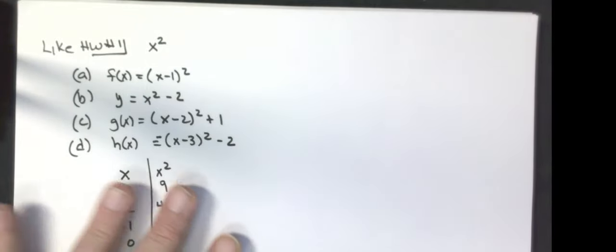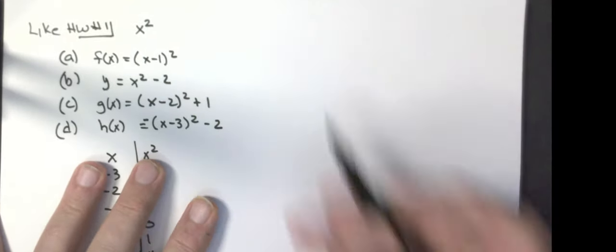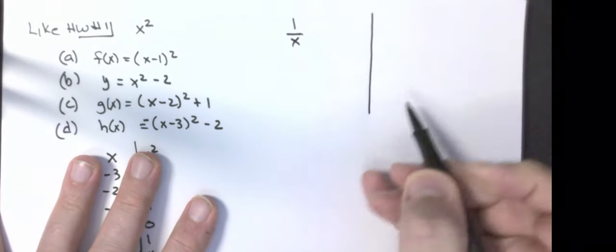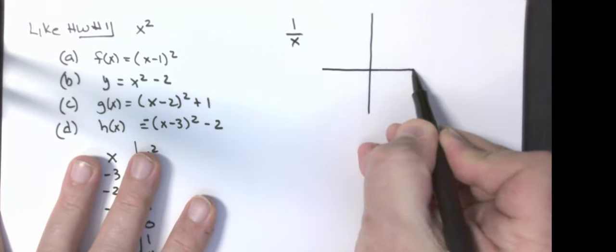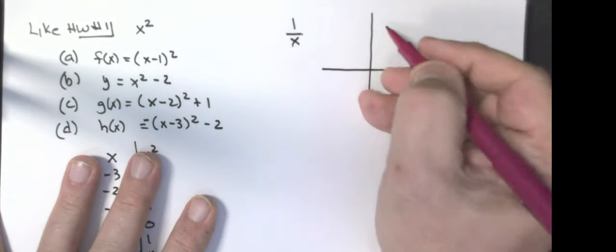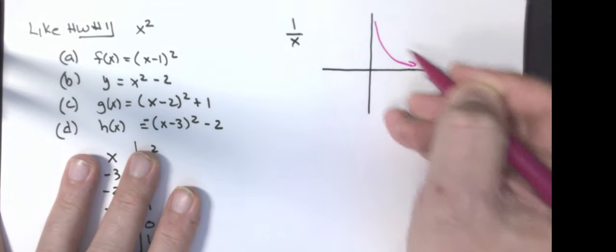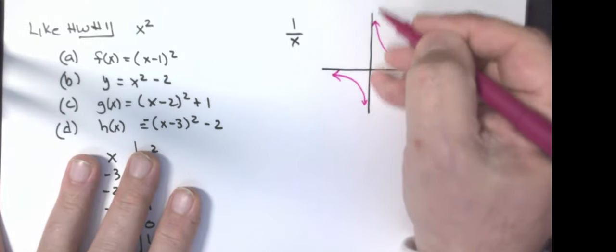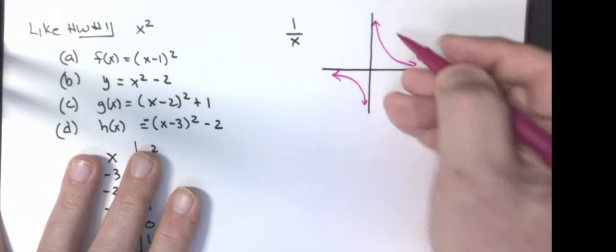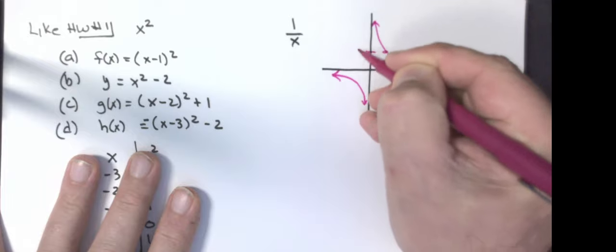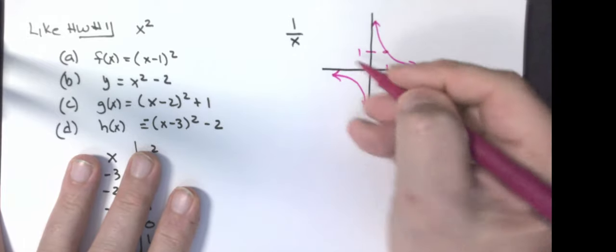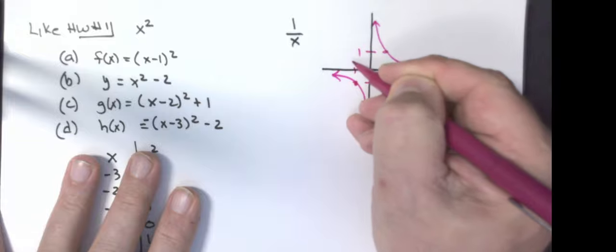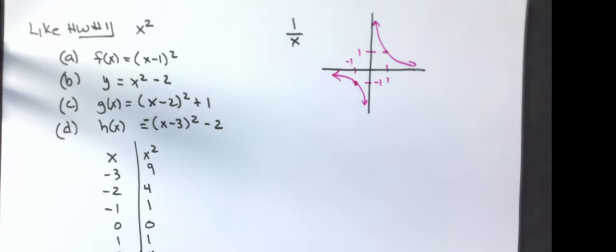One I don't have written on there that I see that's a possibility for your homework is one over x. So let's talk about what one over x does. One over x is our hyperbola. Looks like this. Those are vertical asymptotes and a horizontal asymptote. We have the point one, one on the graph and the point negative one, negative one on the graph.